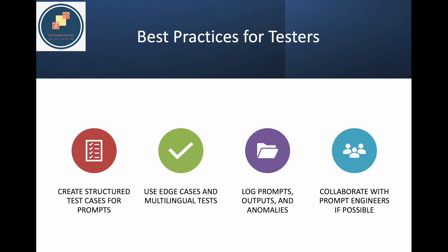Best practices for testers: first, create structured test cases for prompts — I have a previous video where I discussed how to create test cases for AI use cases. Also do multilingual tests — using different languages matters if they are supported. Log prompts, outputs, and anomalies — this is very important. For example, if you ask a question 10 times and nine times it gives a proper answer but once it gives a different answer, that is an anomaly. Someone may encounter that one-in-ten response on their very first try, which could cause a problem. Knowing these anomalies is critical, and you need to communicate them to the prompt engineers or AI/ML engineers on the team.